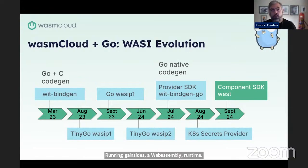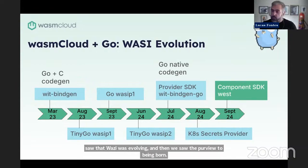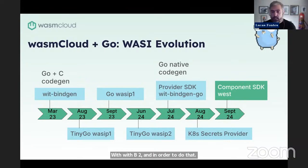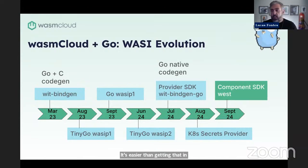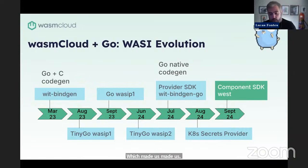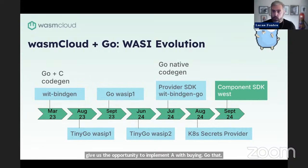Then around February 2024, we saw that WASI was evolving and we saw WASI Preview 2 being born. Around that time, we had to get Go running with WASI P2. In order to do that, we focused on the TinyGo implementation, as getting that inside TinyGo is easier than big Go — it moves faster, the community is responsive, the developers are awesome. With that, we got WASI Preview 2, which changed the underlying implementation of how those binaries are generated in TinyGo, giving us the opportunity to implement a WitBindGen that got rid of all that C code, which was problematic at the beginning.